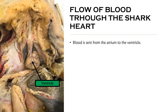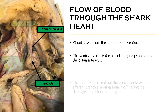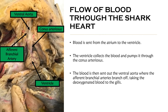Blood is then sent from the atrium to the ventricle, and then that blood is pumped from the ventricle through the conus arteriosus into the ventral aorta. The ventral aorta is that opaque section that's anterior to the conus arteriosus.